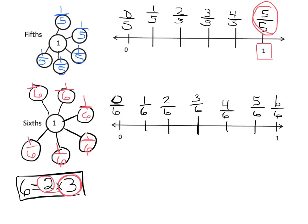Now that we have our equal intervals we can label them, and we see that six-sixths is equal to one whole. Parents and teachers, we want to guide students toward seeing this beautiful pattern: when the numerator is equal to the denominator — when these two numbers are the same — five-fifths is one whole, six-sixths is one whole.